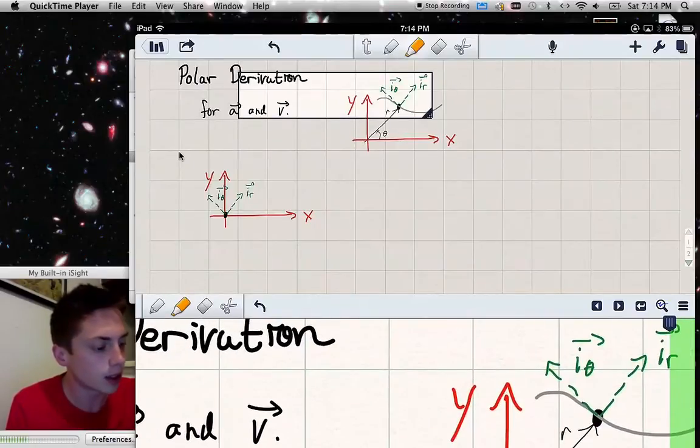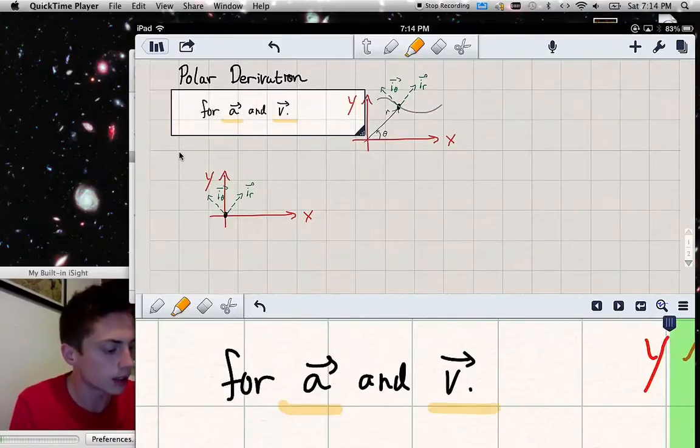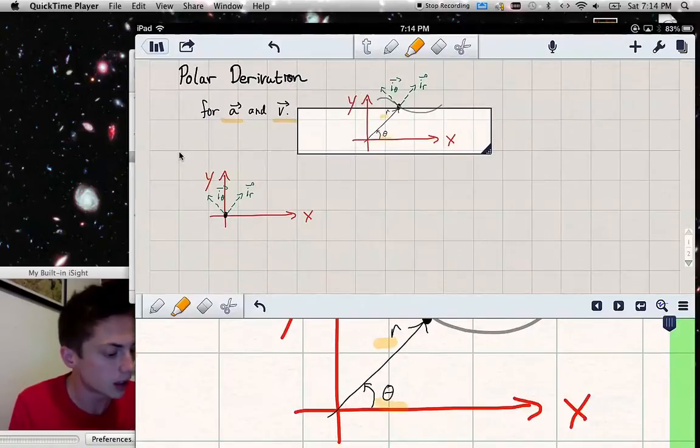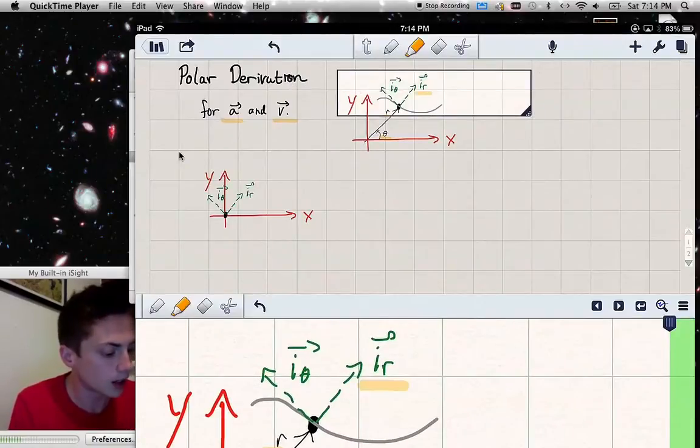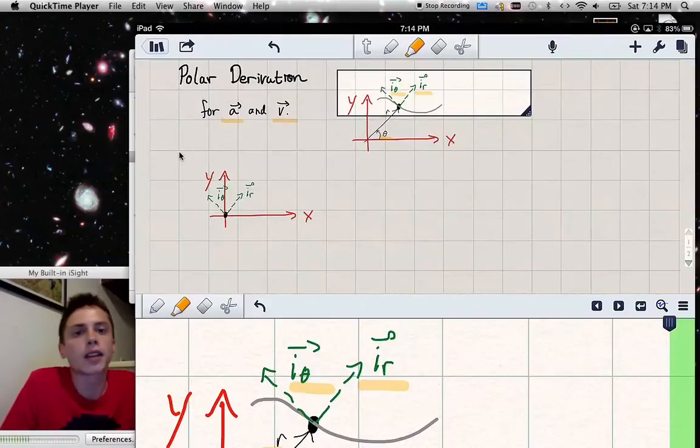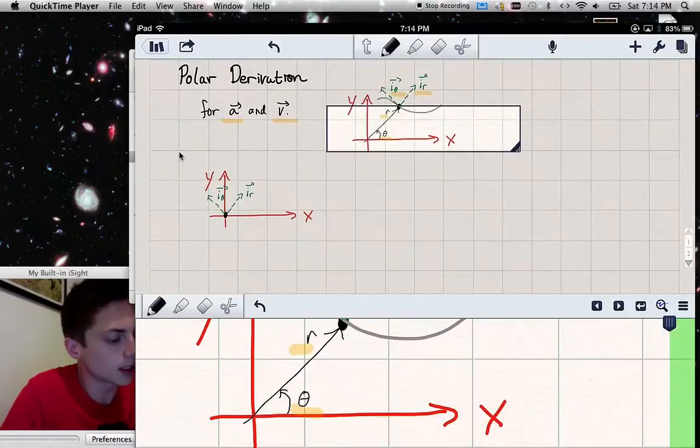So what we'd like to do is express the acceleration and velocity in terms of r, theta, and the unit vectors i_r and i_theta, which point in the increasing direction of each quantity. So i_r points in the increasing direction of r, i_theta points in the direction of greatest increase for theta.